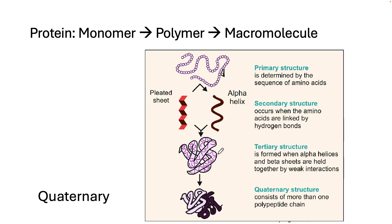The last level of structure is when two or more protein chains come together and work as one. Not all proteins have quaternary structure. Some proteins exist as a single peptide chain.